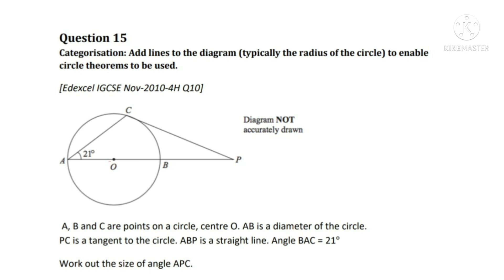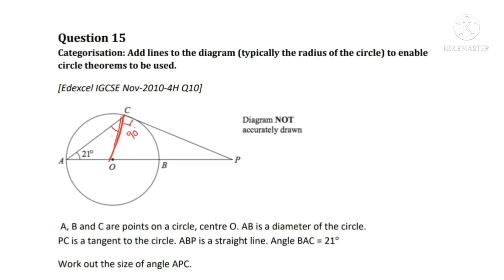Angle BAC is equal to 21 degrees. Work out the size of angle APC. In order to find angle APC, we will do a construction here. We will join OC, and this angle is 90 degrees because the angle between the radius and the tangent is 90 degrees.